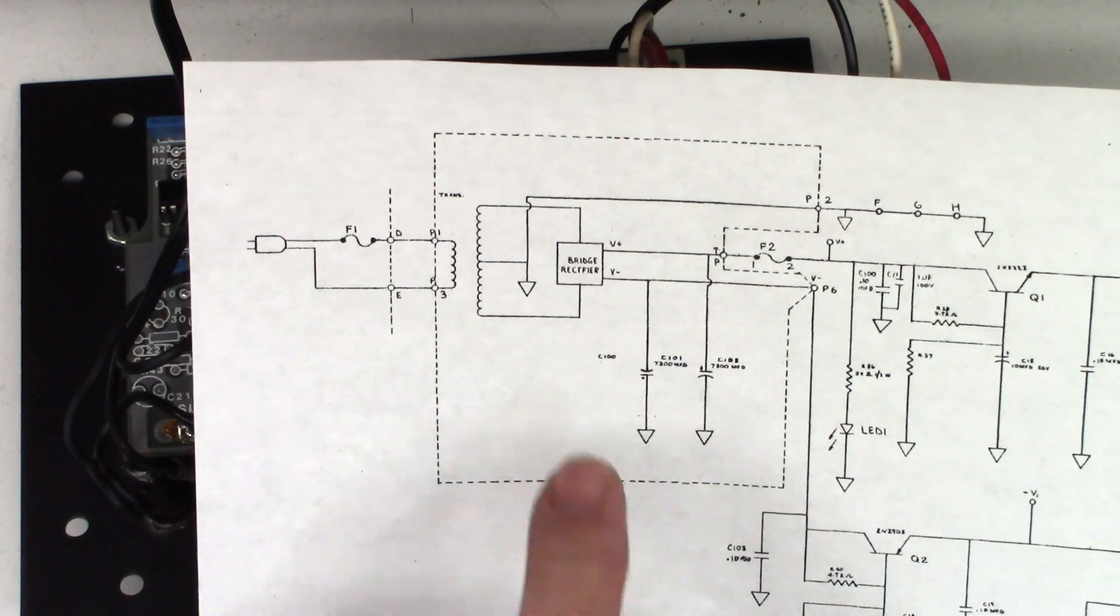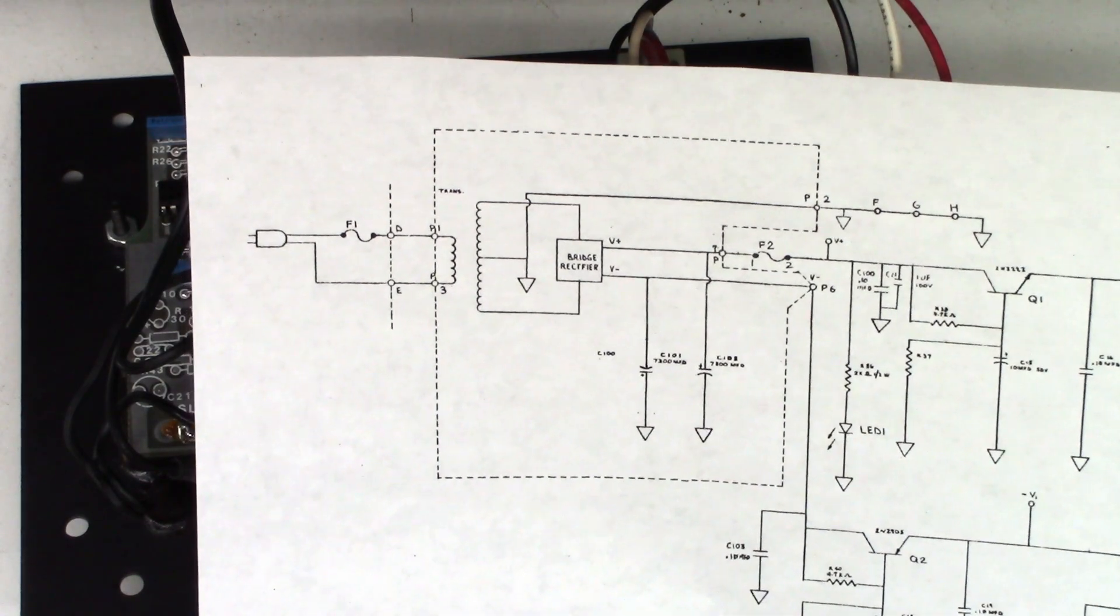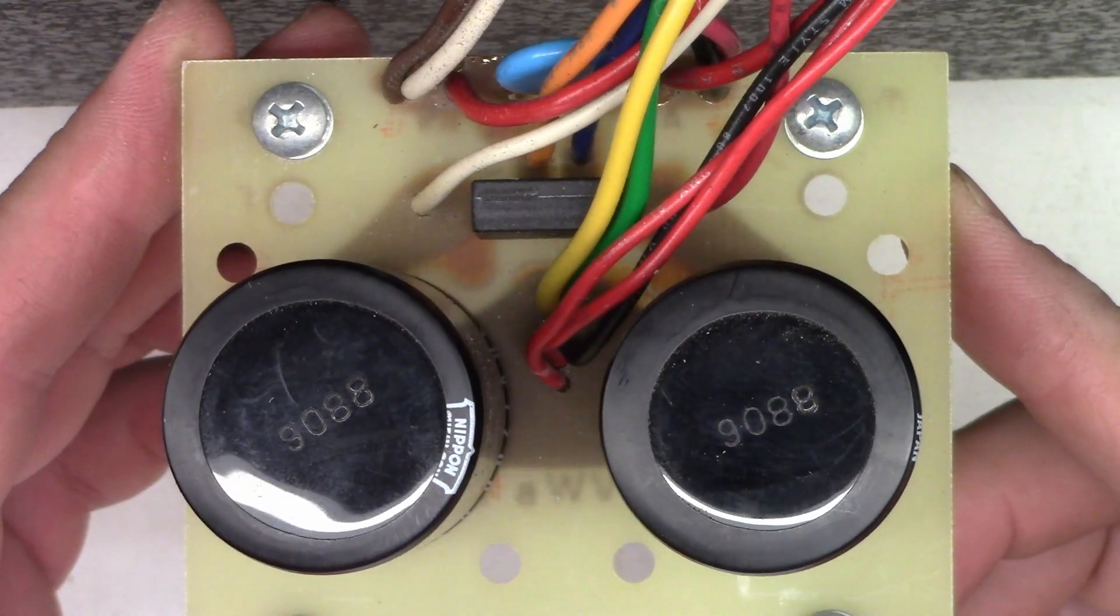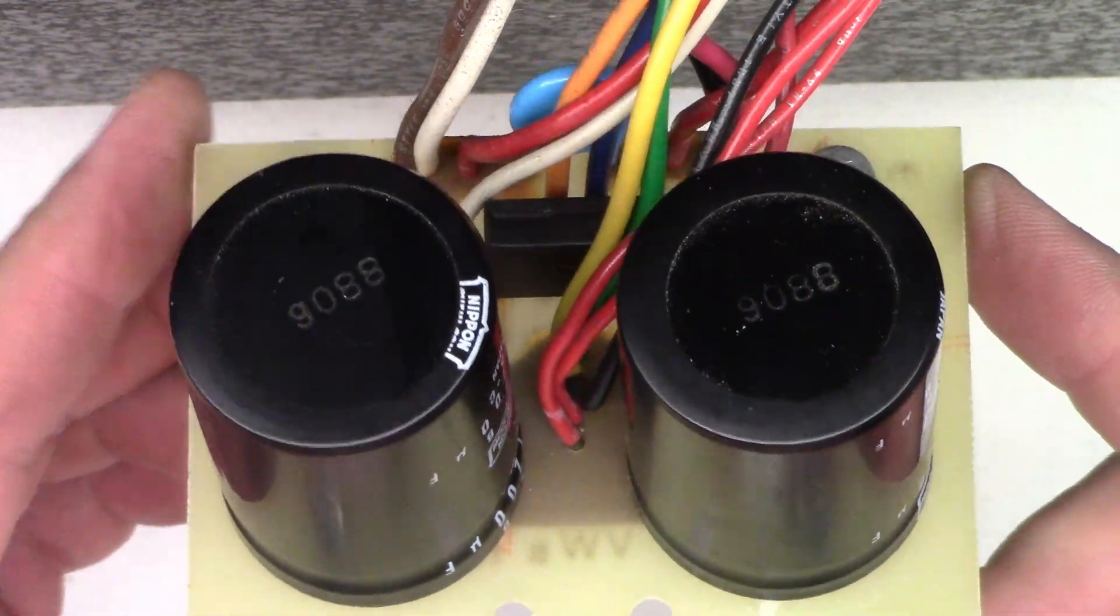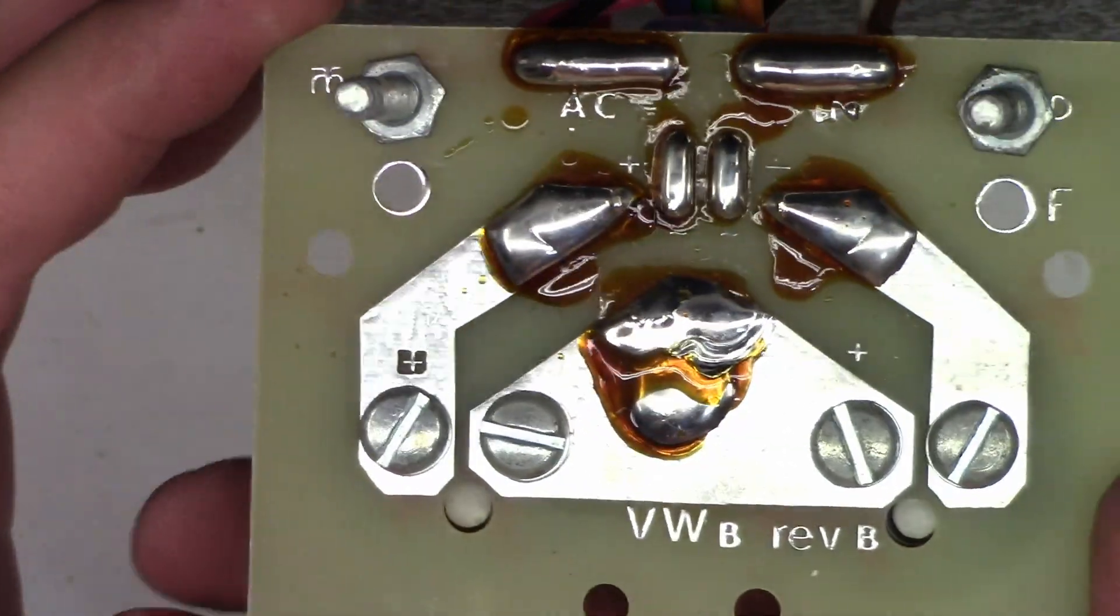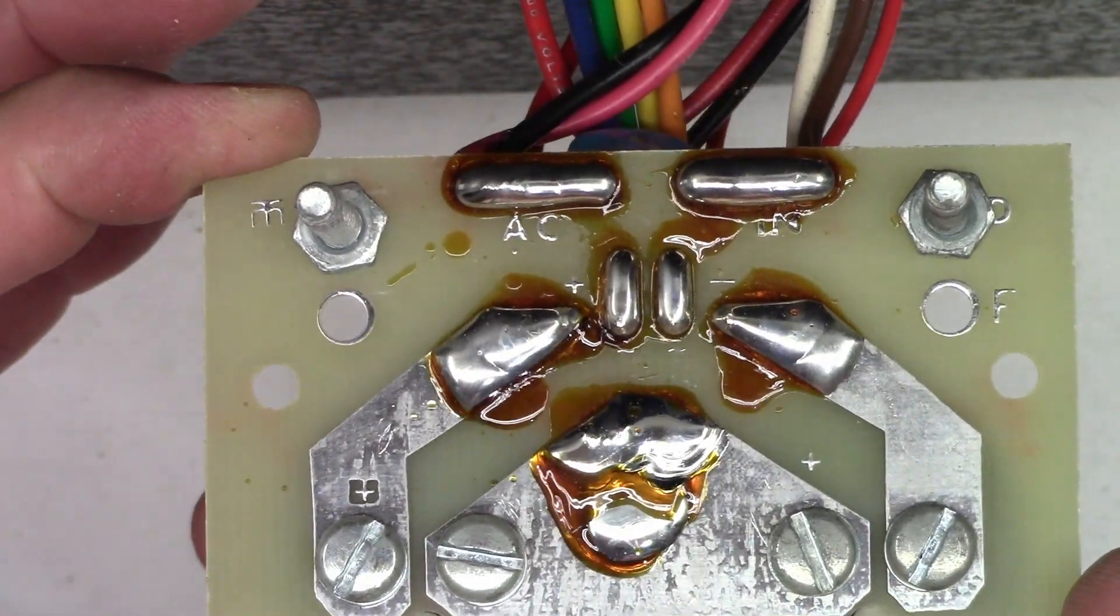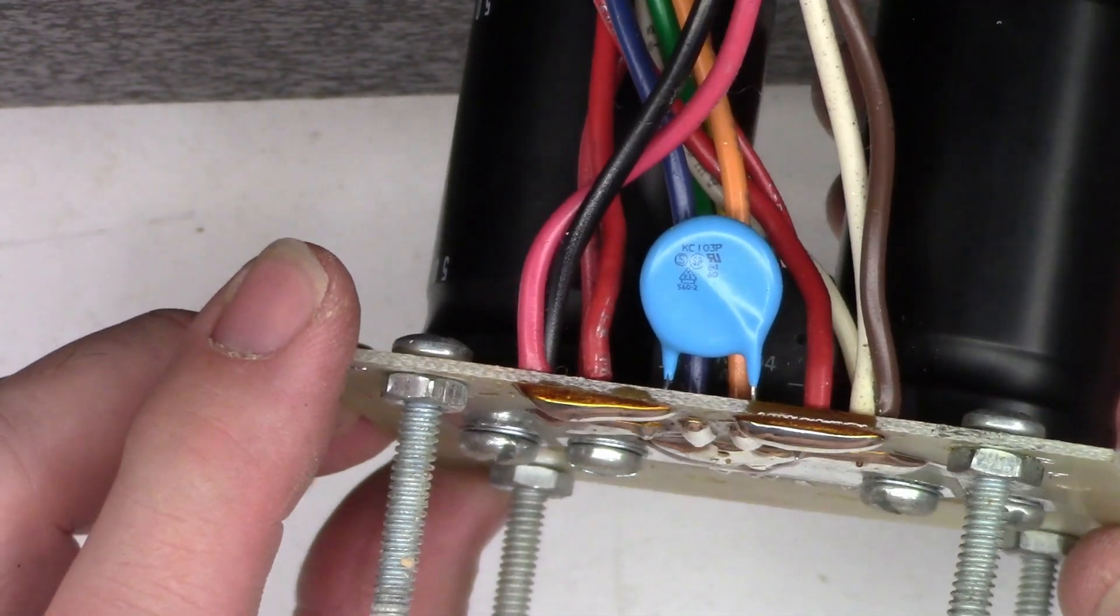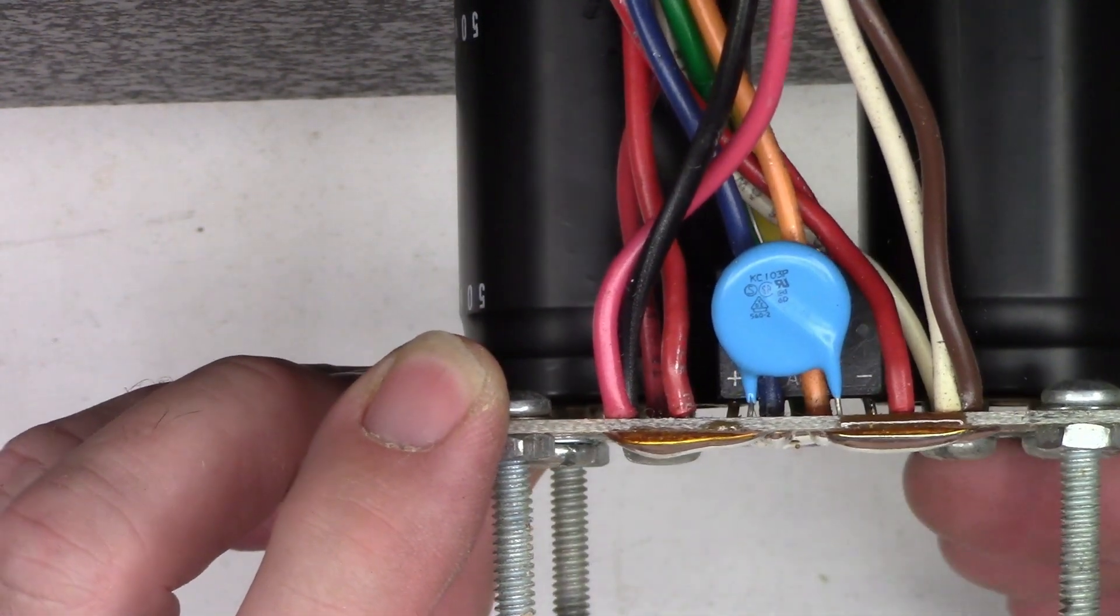Now, the rectifier and the filter caps come out separately and the transformer stays inside the unit. So here is the power supply board. That's all there is to it. A couple of big filter caps. There's really not much to it at all. And a bridge rectifier. And we have a surge suppressor which is a resistor and a capacitor together.